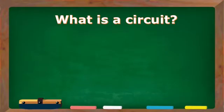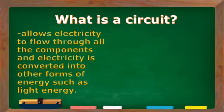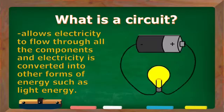What is a circuit? A circuit allows electricity to flow through all the components and electricity is converted into other forms of energy such as light energy.